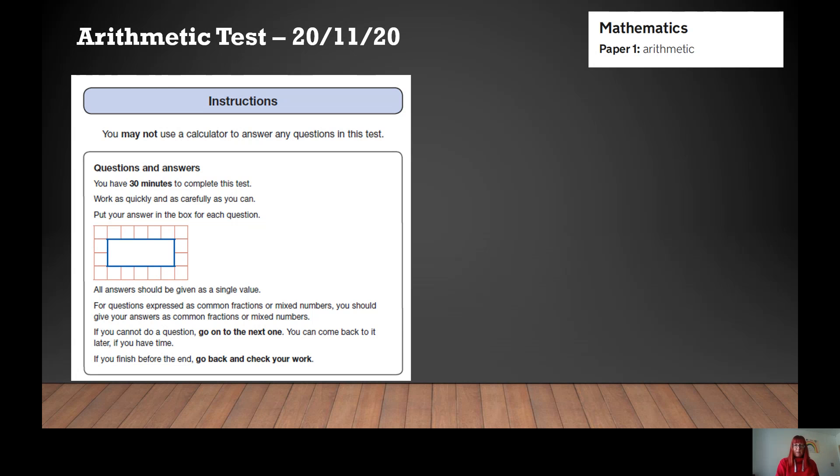Well, obviously you don't have the paper in front of you, so you might want to pause the screen so you can answer each of the questions and then write your answers and your workings out in your homework books. All answers should be given as a single value. For questions expressed as common fractions or mixed numbers, you should give your answers as a fraction or a mixed number rather than converting it to a decimal.